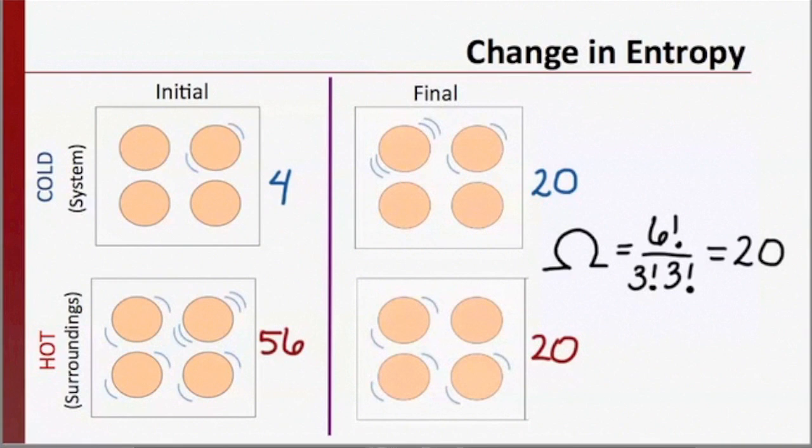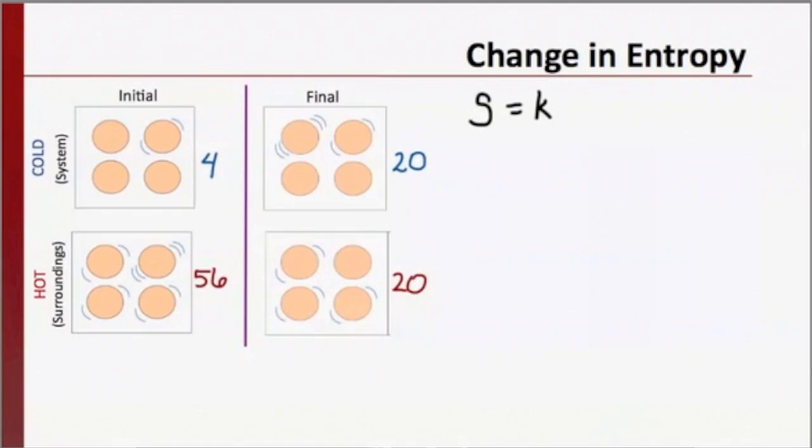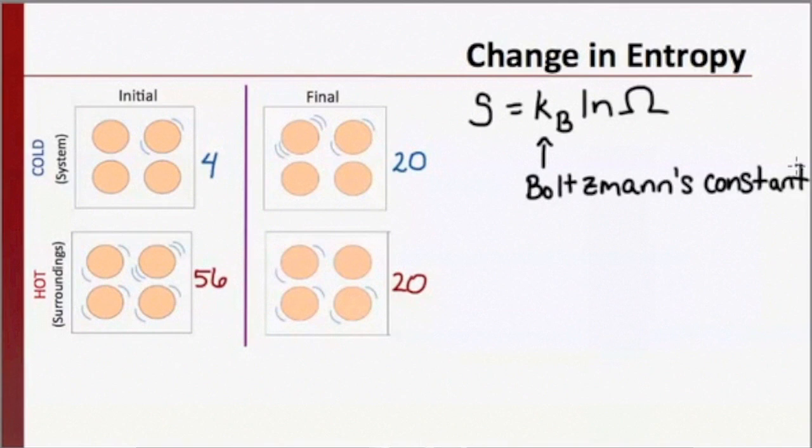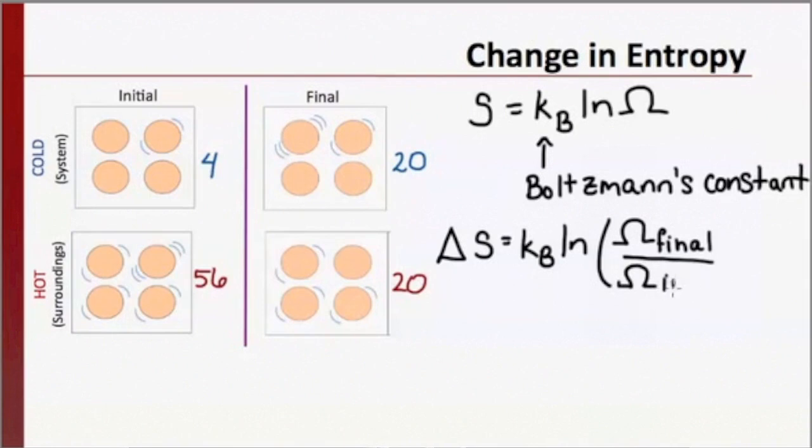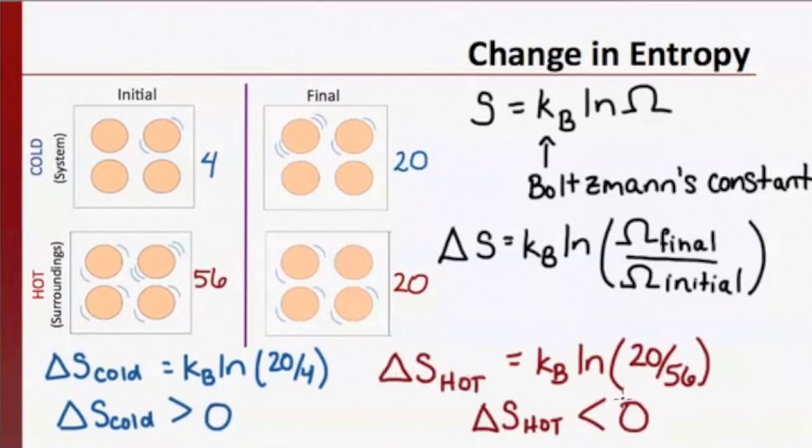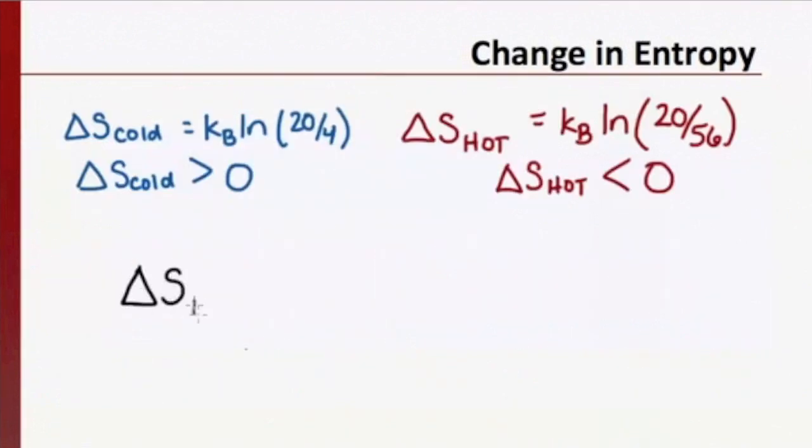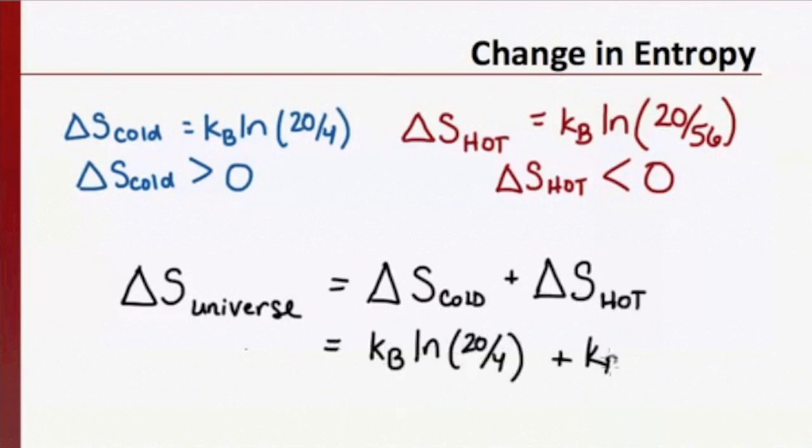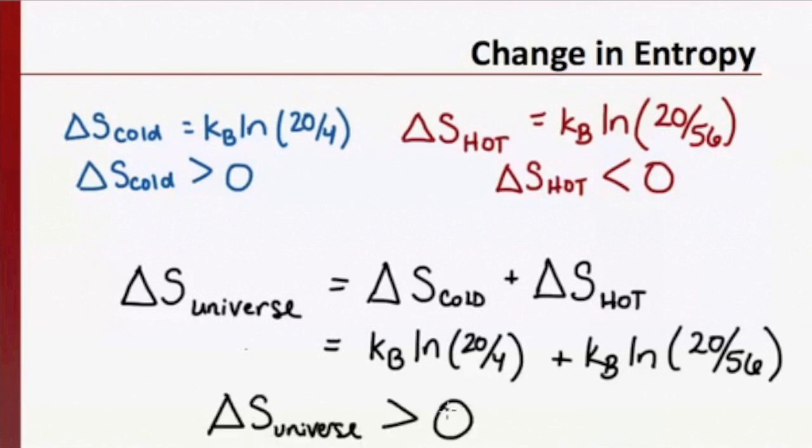Let's see what this means for our total entropy change. We will use a relationship for entropy that was derived by Ludwig Boltzmann. It states that entropy is equal to a constant, called the Boltzmann constant, times the natural log of the number of microstates. When calculating the entropy change, whether it be for the system or surroundings, delta S would be equal to Boltzmann's constant times the natural log of the ratio of the final number of microstates to the initial number of microstates. The entropy change in our cold bar was positive, while the entropy change in our hot bar was negative. But remember, it's the total entropy change that matters. We see that our total entropy change for this process is positive. The spontaneous transfer of heat from our hot bar to our cold bar is consistent with the second law of thermodynamics.